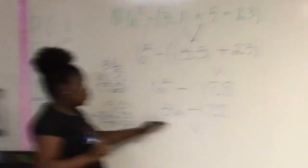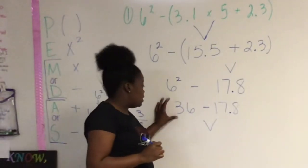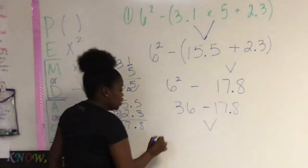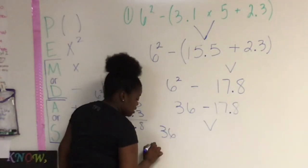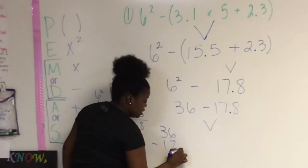Now, to finish the problem off, I do my last step, which is subtraction. So we need to figure out 36 minus 17 and 8 tenths.